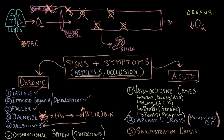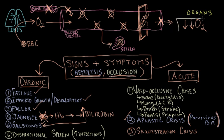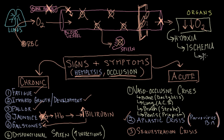The sickled shape makes red blood cells not only vulnerable to destruction but also predisposes them to occlusion of blood vessels — they kind of form a roadblock. If you're occluding a blood vessel, you're stopping blood flow and further diminishing oxygen delivery to organs. A deficit of oxygen in the tissue is called hypoxia, and if you have prolonged hypoxia, you can get cell death or ischemia. Many so-called vaso-occlusive crises are a direct result of this principle.